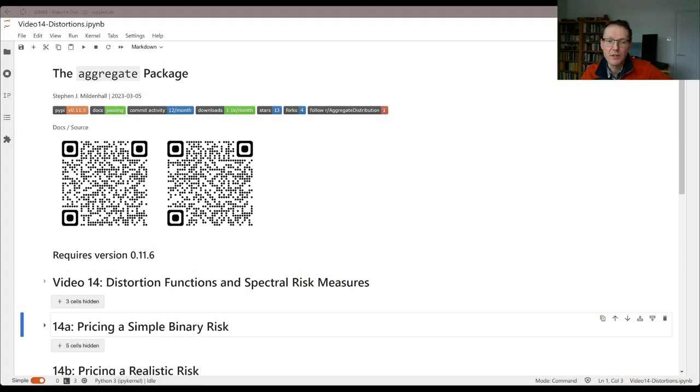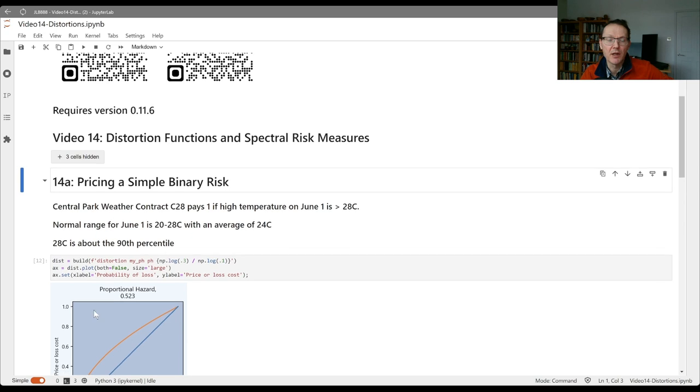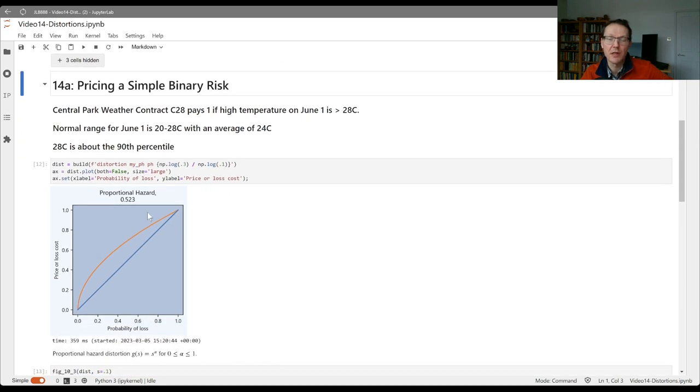Today we're continuing to discuss distortion functions and spectral risk measures. Last time we introduced the idea of a distortion function as pricing a simple Bernoulli 0 or 1 contract, where the x-axis gives you the probability of the loss and the indicated value gives you the price that you would charge for that contract.